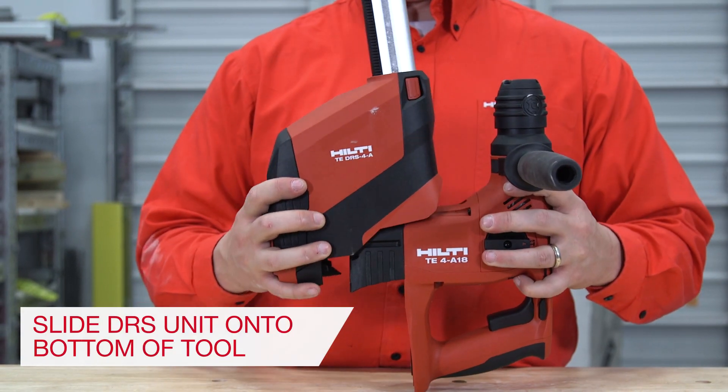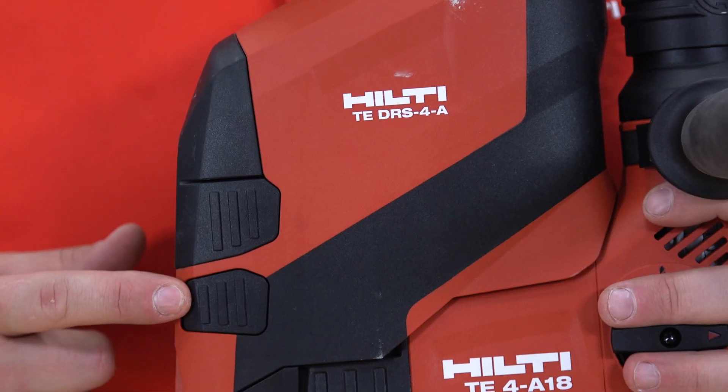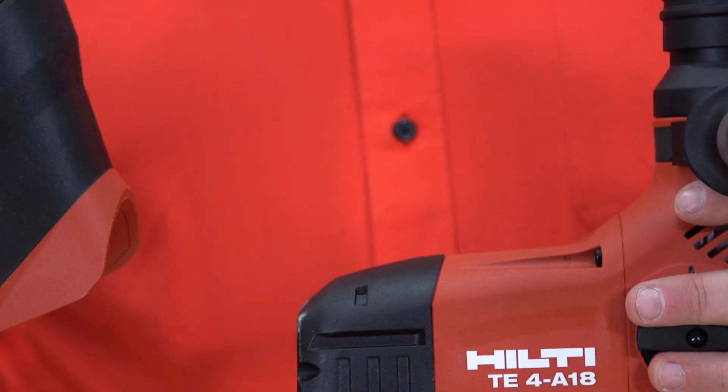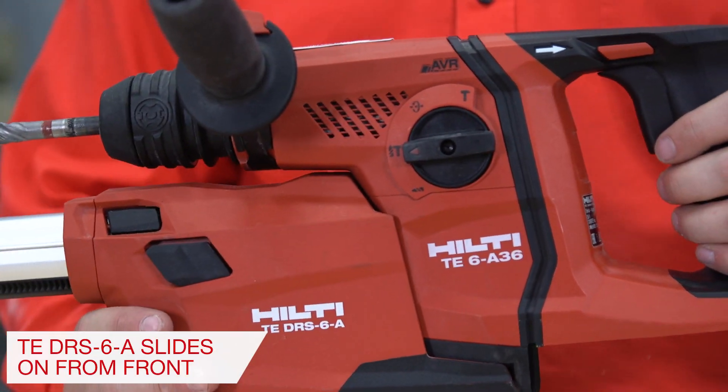Slide the DRS unit onto the bottom of the tool. Use the latch trigger to remove the system if needed. Note for the TE-6A, the DRS unit slides on from the front of the tool.